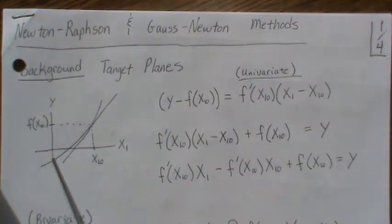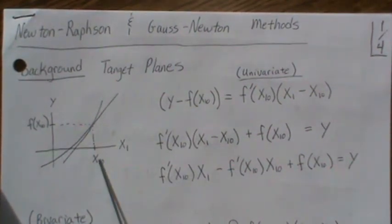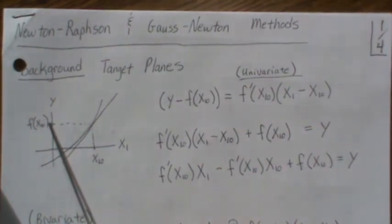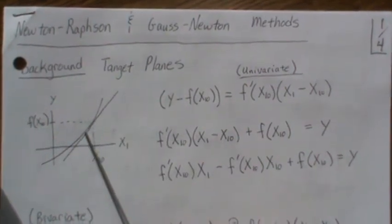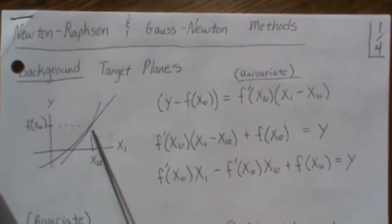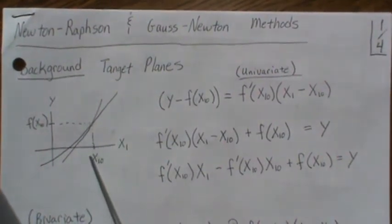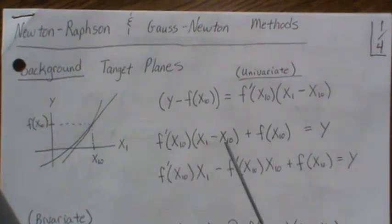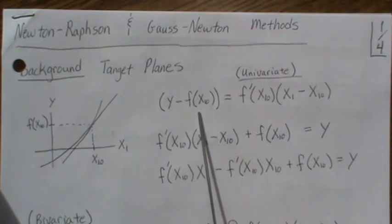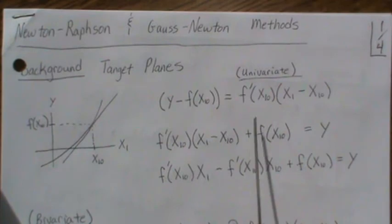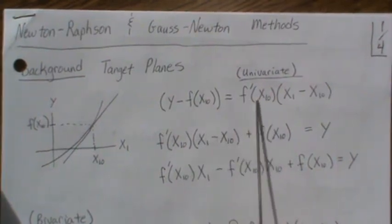So in the univariate case, we have some function, we have a known point, and we can plug it into f. But we want to find the tangent line to this point, and we know that is the first derivative evaluated at this point. So if we use the point-slope formula, this is the known point and this is the slope.